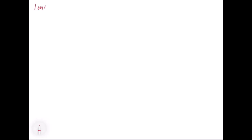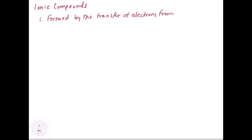So now let's talk about ionic compounds. We talked about ions, and now we're going to talk about what happens when these ions come together to form a compound. Ionic compounds tend to be formed by the transfer of electrons from one atom to another.